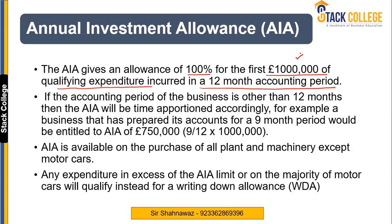Sometimes your accounting period is short, that is less than 12 months, and sometimes it is long, more than 12 months. For example, if your accounting period is 9 months, we have to reduce this limit. So: £1 million × 9/12 = £750,000. This means up to £750,000 AIA is available. If your capital expenditure is more than that, you will only get £750,000 in the case of a short accounting period.